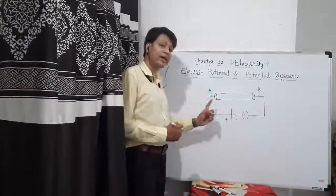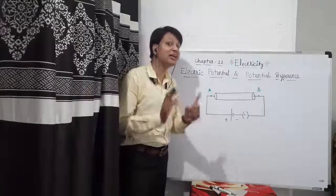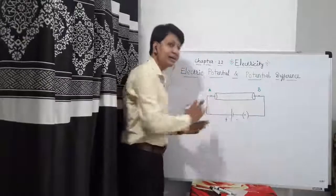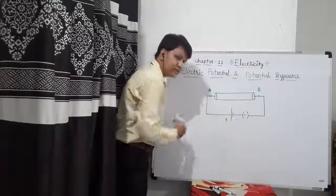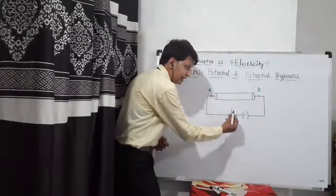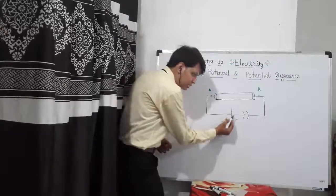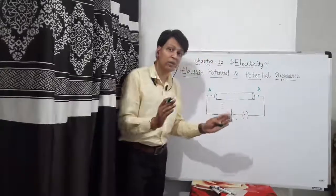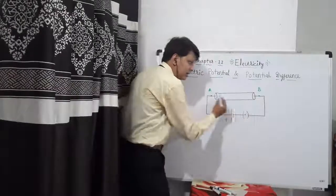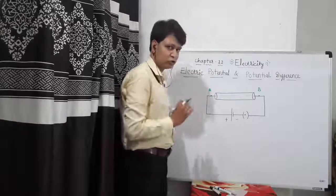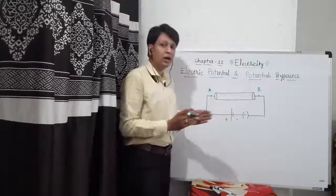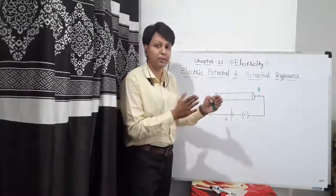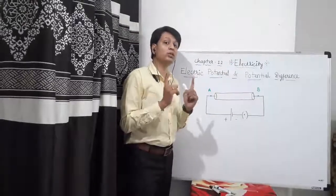Now we are going to take the example of a simple circuit. A circuit is a continuous and closed path for electric current. The symbol shown in the circuit is a common cell — the big terminal is the positive terminal and the small terminal is the negative terminal. There is also a simple key in closed condition and a conductor having free electrons. This cell will provide a potential difference.